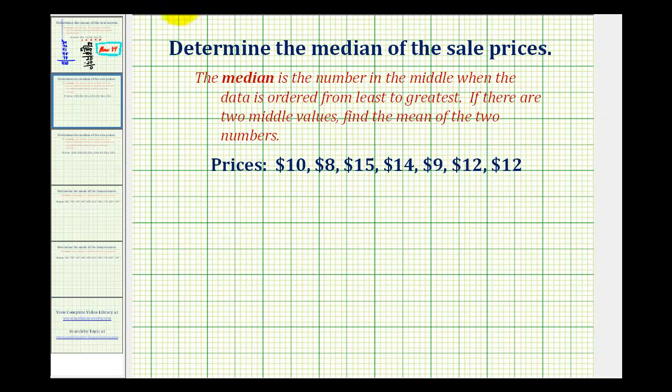So the first step to determine the median is always to order the data from least to greatest. We'll start with eight dollars, nine dollars, ten dollars, two at twelve dollars, one at fourteen dollars, and one at fifteen dollars.